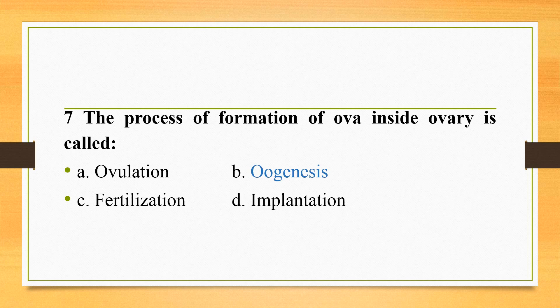The process of formation of ova inside the ovary is called oogenesis. Ovulation is the release of ovum from the ovary. Fertilization is the process of fusion of ovum with sperm. Implantation is the process of attachment of a fertilized egg to the wall of the uterus.